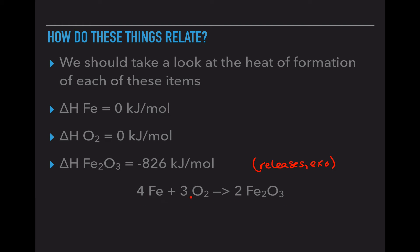So here's our chemical formula. Four moles of iron, three moles of oxygen gas, creates two moles of iron oxide. We are going to use this on the next slide.